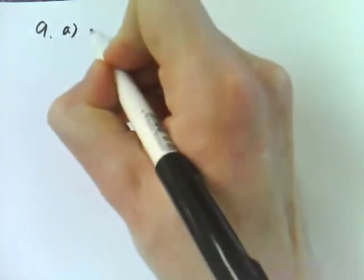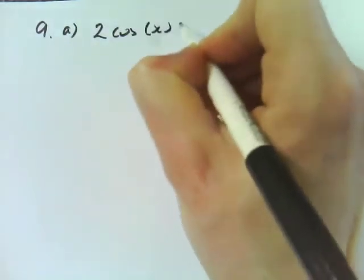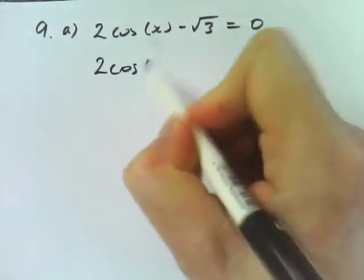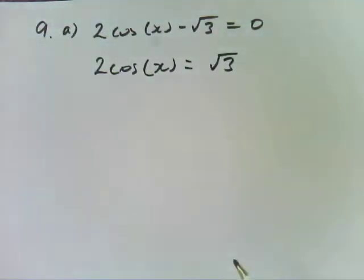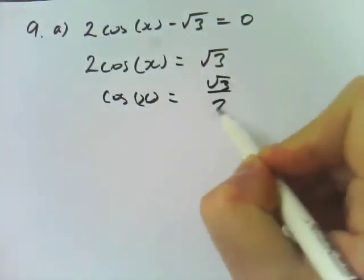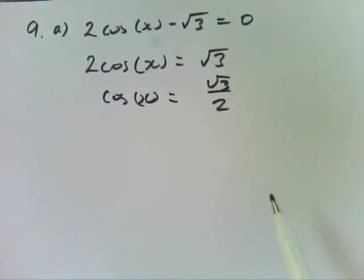Last thing we're going to talk about for this particular chapter is question 9. It's asking you to find the general solution and apparently you're not allowed to use your calculator, which is a bit of a pain. But the first question, 9a, is 2 cos x minus root 3 equals 0. What am I going to do? I'm going to rearrange it. Does it matter? It's the exact values table. Exact values table, perfectly right.